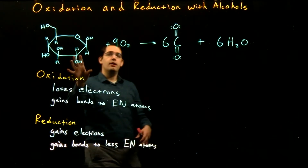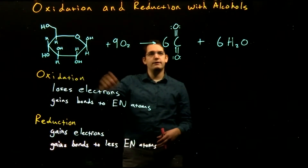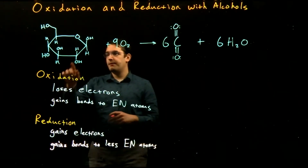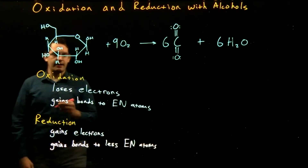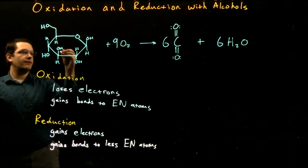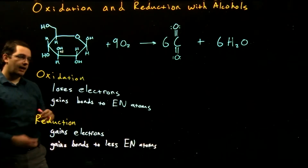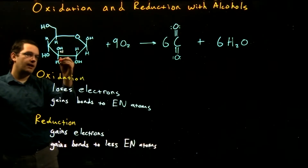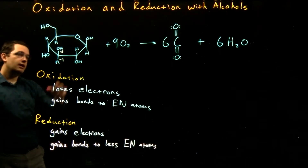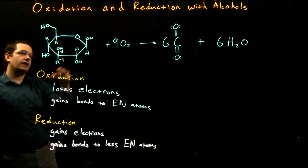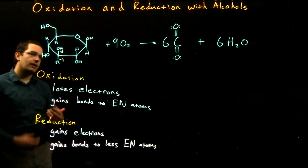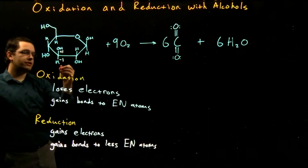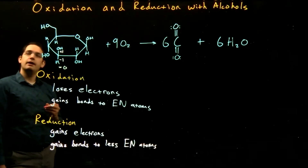Going back to our sugar reaction — glucose being oxidized to create carbon dioxide — if we look at a particular carbon in glucose: there's an oxygen attached, giving an oxidation number of +1 from that oxygen pulling away electrons, and a hydrogen that's less electronegative giving −1. The carbon-carbon bonds contribute nothing because they have equal electronegativity and equally share those electrons. So our overall oxidation number for this given carbon is zero.